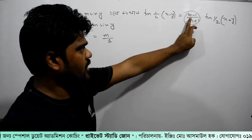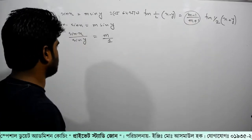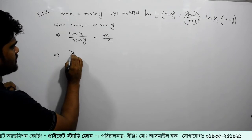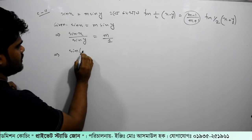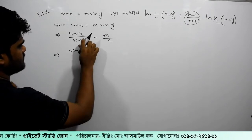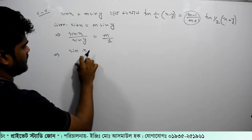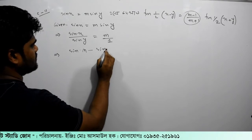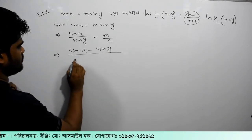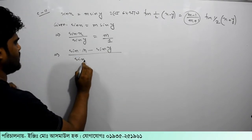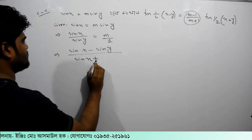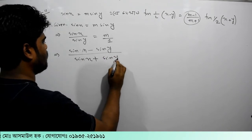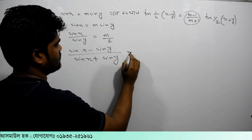So we have 2 zones. Sin x minus sin y divided by zone, and sin x plus sin y. And we have 2 zones.